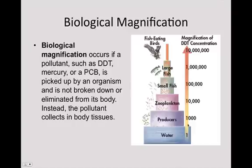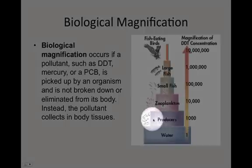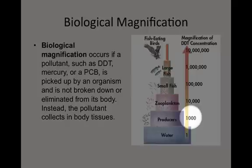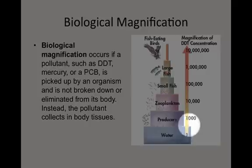Water doesn't stay on its own — it gets used up, in this case by producers such as phytoplankton. These small organisms use sunlight to make their own energy, but they also use water, and in doing so they pick up some of the chemical. You'll notice the amount has changed: it went from about 1 up to 1,000 parts per million. That might not seem like a lot, but it's starting to increase.